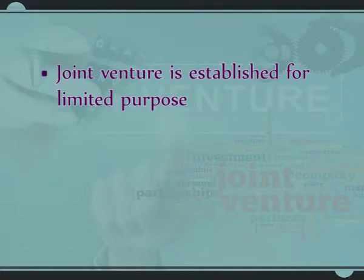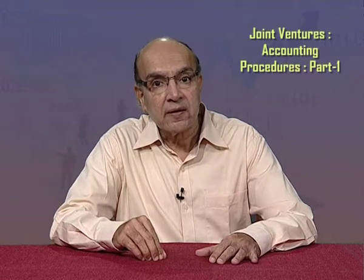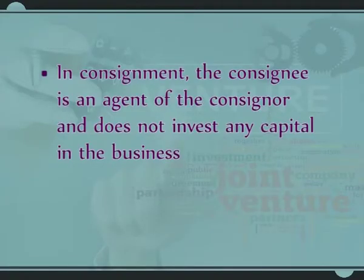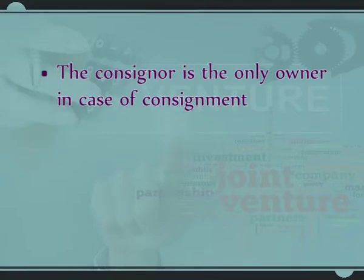Number 4: Joint venture is established for a limited purpose, such as construction of a building, and is closed as soon as the activity is completed. The relationship between co-venturers comes to an end after completion. In consignment, the relationship between consigner and consignee may continue in future. Number 5: In consignment, the consignee is an agent and does not invest any capital. In joint venture, co-venturers invest capital. Number 6: The consigner is the only owner in consignment; in joint venture, all co-venturers are owners.